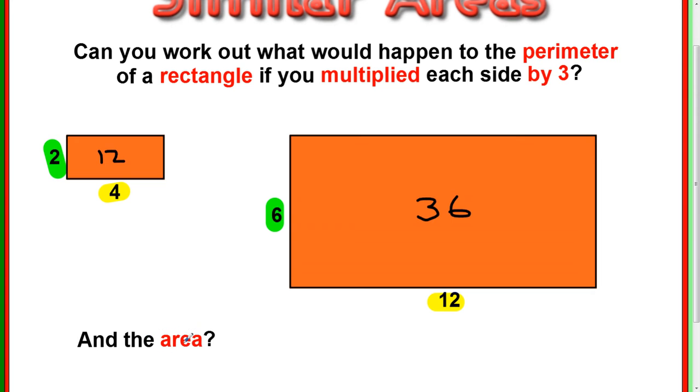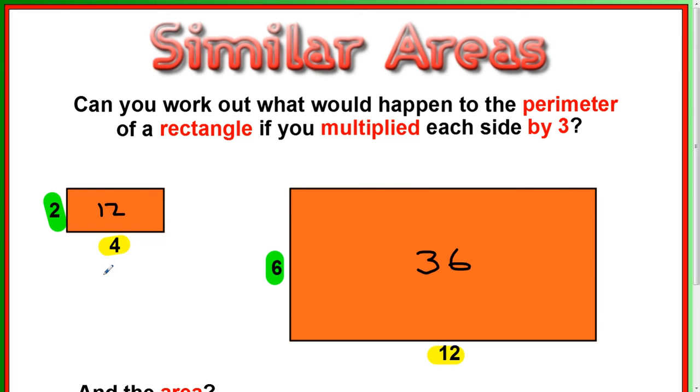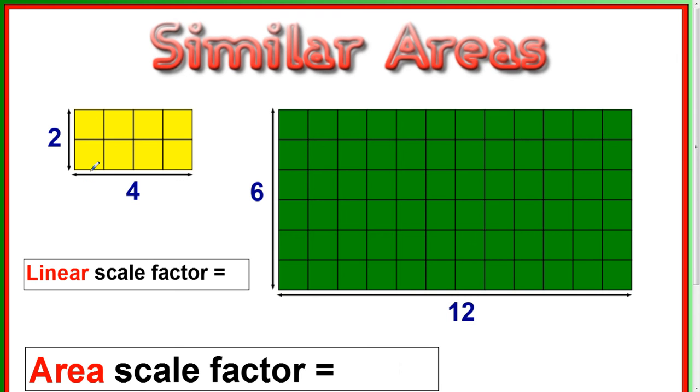But can the same be said for the area? Well, we have to look at a bit more detail with that. So let's look at the 2 by 4 in terms of squares. As we know, that yellow square is the same as that green square. So the same as before, we've got a side length of 2 here, and a corresponding side length of 6, which has been multiplied by 3. And we have a side length of 4, and it's been times by 3 to give you a side length of 12.